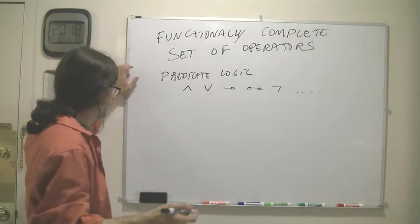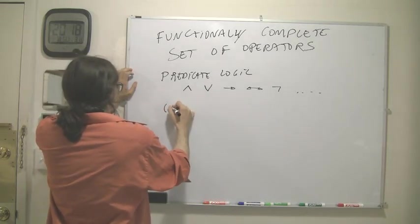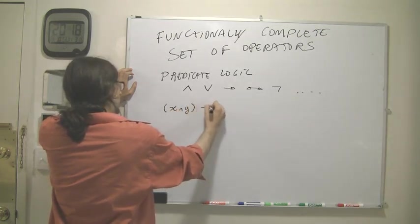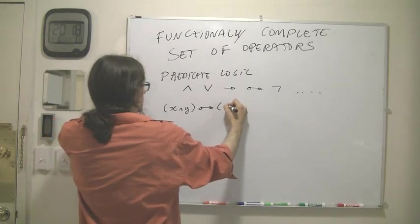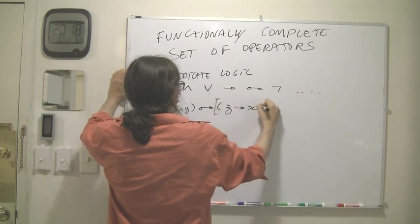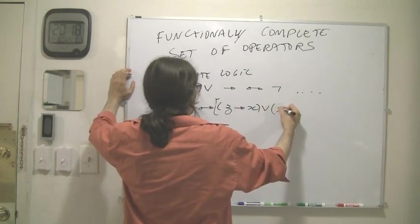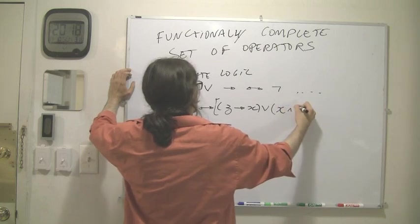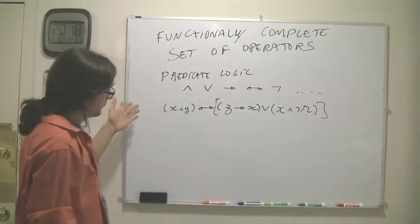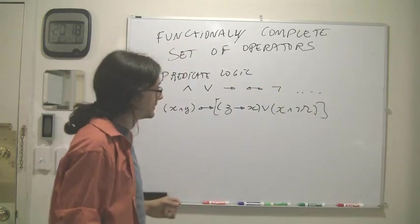We might take variables such as x, y, z, and so on, and write things like x and y if and only if z implies x, or I'm just inventing something here, or x and not y. Something like that. So we use these operators in predicate logic to write expressions like this.